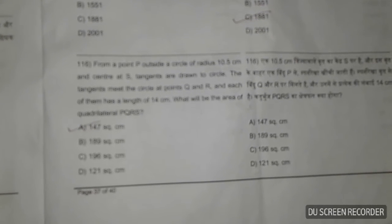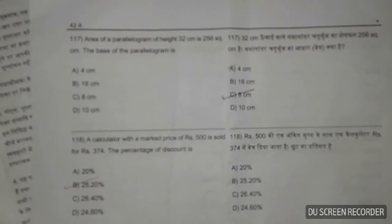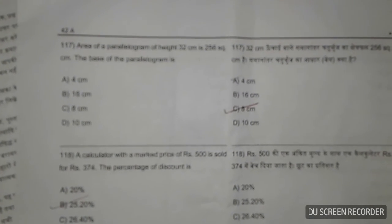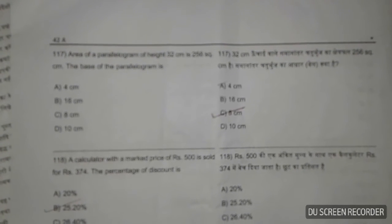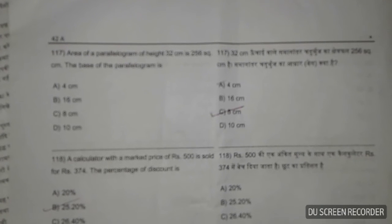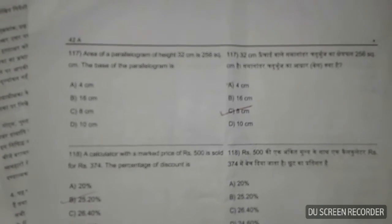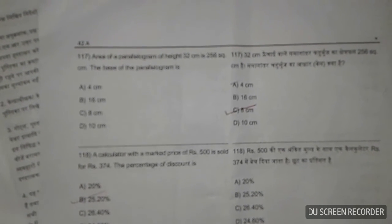be the area of quadrilateral PQRS? The answer is 147 square centimeters. The area of a parallelogram of height 32 centimeters is 256 square centimeters. The base of the parallelogram is 256 divided by 32, which equals 8 centimeters.